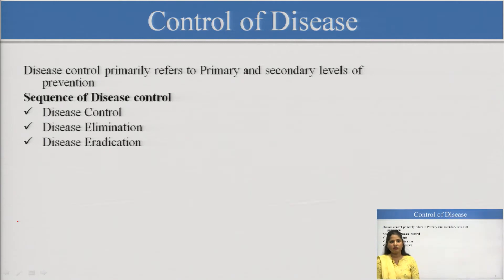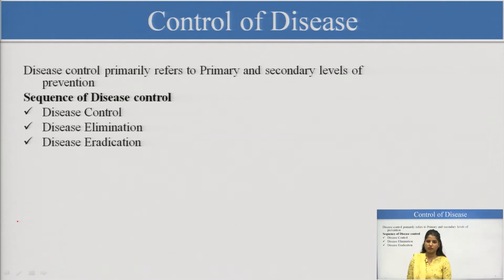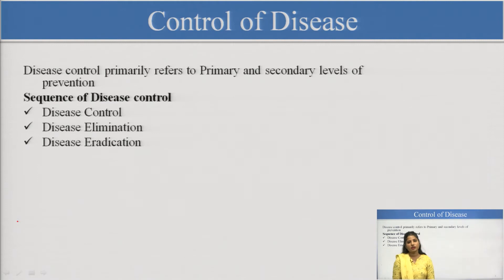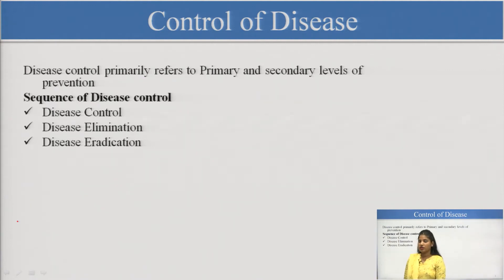The disease can be controlled by a sequence. First, we will target disease control, after that we will eliminate the disease, and then the last stage is eradication of the disease. There are some differences between these stages and of course the timing of the implementation as well.